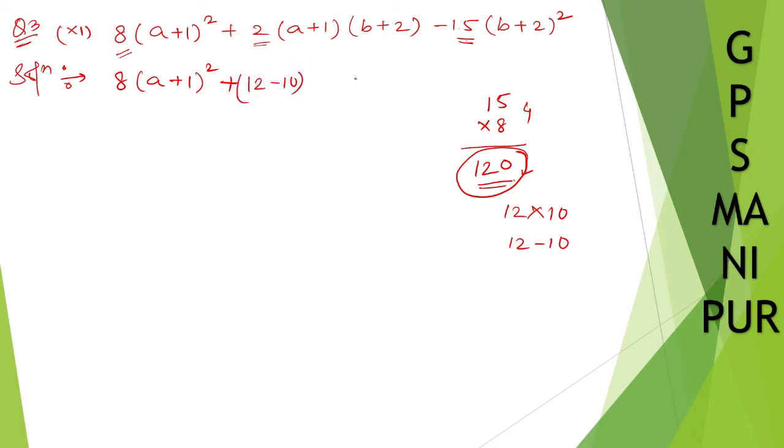So instead of 2, 12 minus 10 is 2, (a+1) and (b+2). Look carefully. If you don't understand, please watch it again. You will understand it.